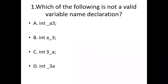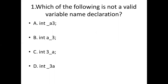First bit: Which of the following is not a valid variable name declaration? Option A: int _A3. Option B: int A_3. Option C: int 3_A. Option D: int _3A. Answer: Option C, int 3_A.